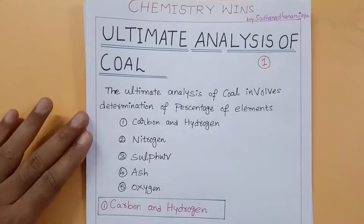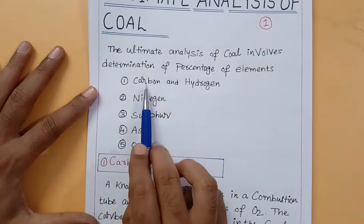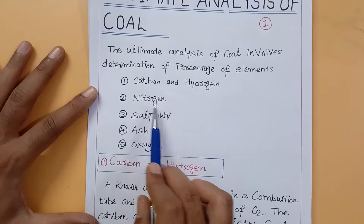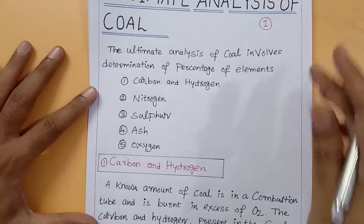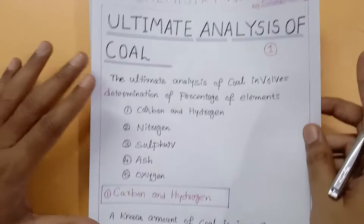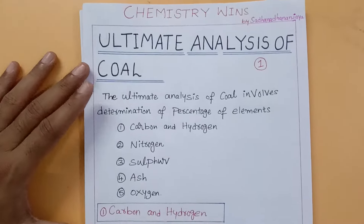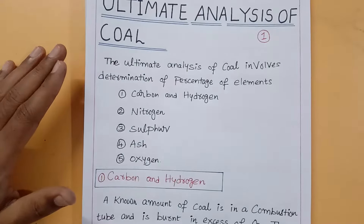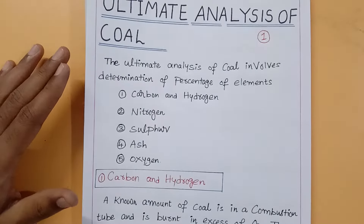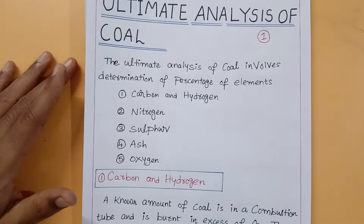The ultimate analysis of coal involves the determination of the percentage of elements like carbon, hydrogen, nitrogen, sulfur, ash, and oxygen. In proximate analysis, we determine approximate ash, moisture, fixed carbon content, and volatile matter.